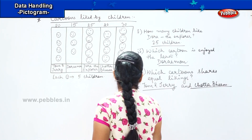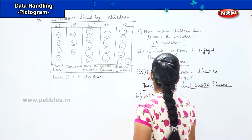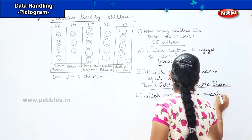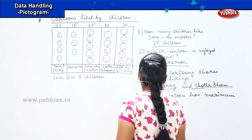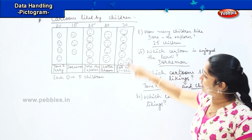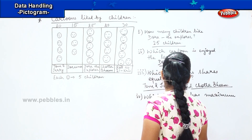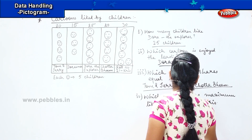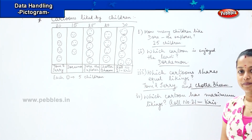Tell me the next question's answer: which cartoon has maximum liking? Which is the cartoon loved by kids the most? Looking at the numbers, it is thirty, which is Krish. So my answer is Krish.